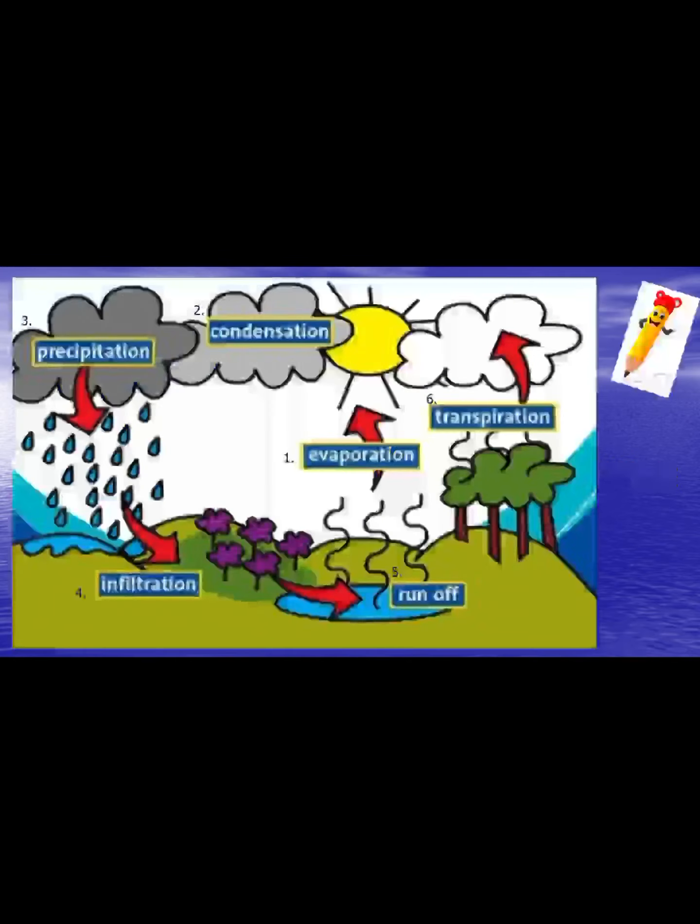There are two videos to have a look at. You probably know a bit about the water cycle from primary school. In the water cycle, you start with evaporation — water from lakes, oceans, and rivers is heated by the sun, causing that water to evaporate, and the water vapor or gas rises up into the air.